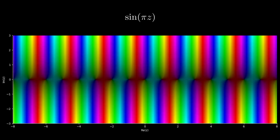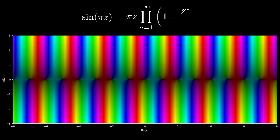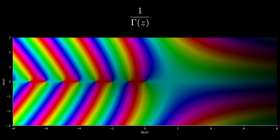Let's look at some examples. The sine function is holomorphic on the entire complex plane and has exactly simple zeros at every integer. We also have a representation as a product which factors out the zeros. Another function holomorphic on the entire complex plane is the reciprocal of the gamma function, which has simple zeros at all negative integers, and we have a corresponding product formula.